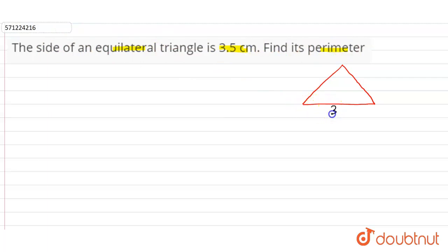Now it is given that the side of the equilateral triangle is 3.5 centimeters. In an equilateral triangle, all the sides of the triangle are equal to 3.5. And the perimeter of an equilateral triangle is the sum of all the sides of the triangle.